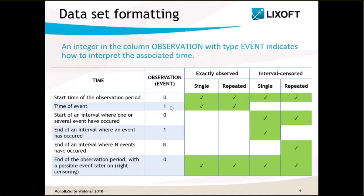An exactly observed event, either single or repeated, is indicated with the value one in the observation column. For interval-censored events, the start time of the interval is indicated with a value zero in the observation column, and the end of the interval is associated with the value one in the case of a single event, or with an integer corresponding to the number of events in the case of repeated events.